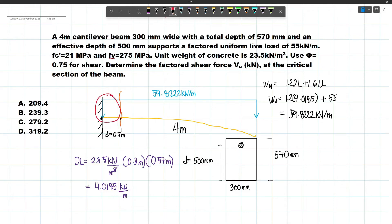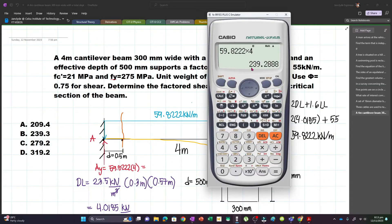The cantilever beam will have an upward reaction here equal to 59.8222 times 4. Let's label this as A and this as B. AY will become 59.8222 times 4, which equals 239.2888.